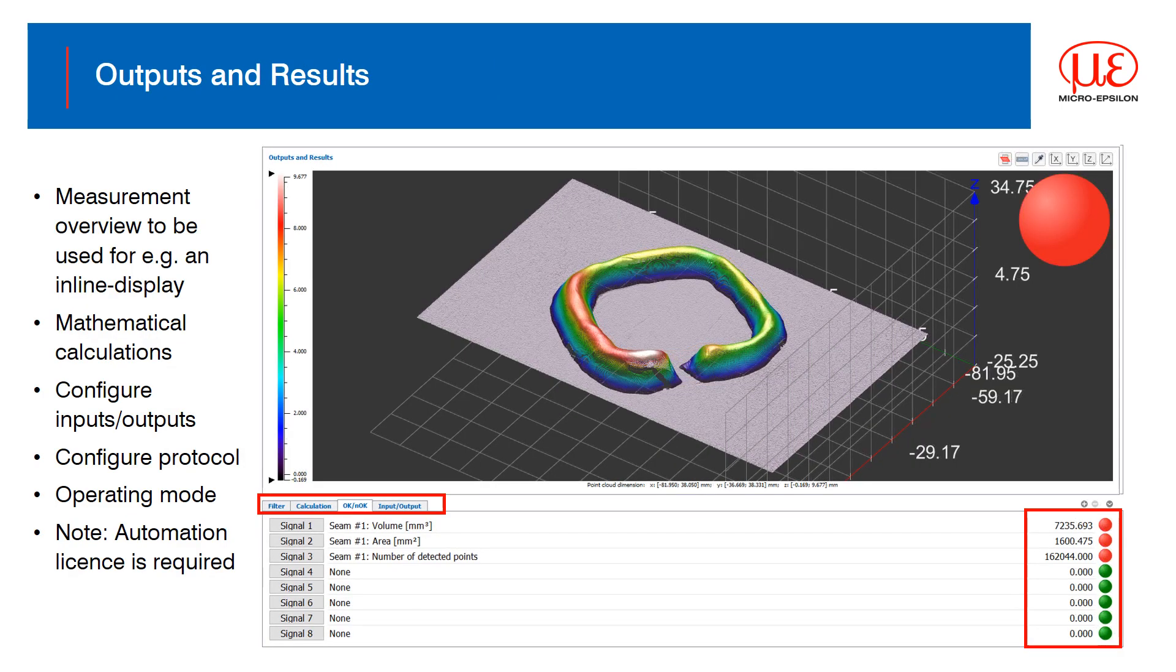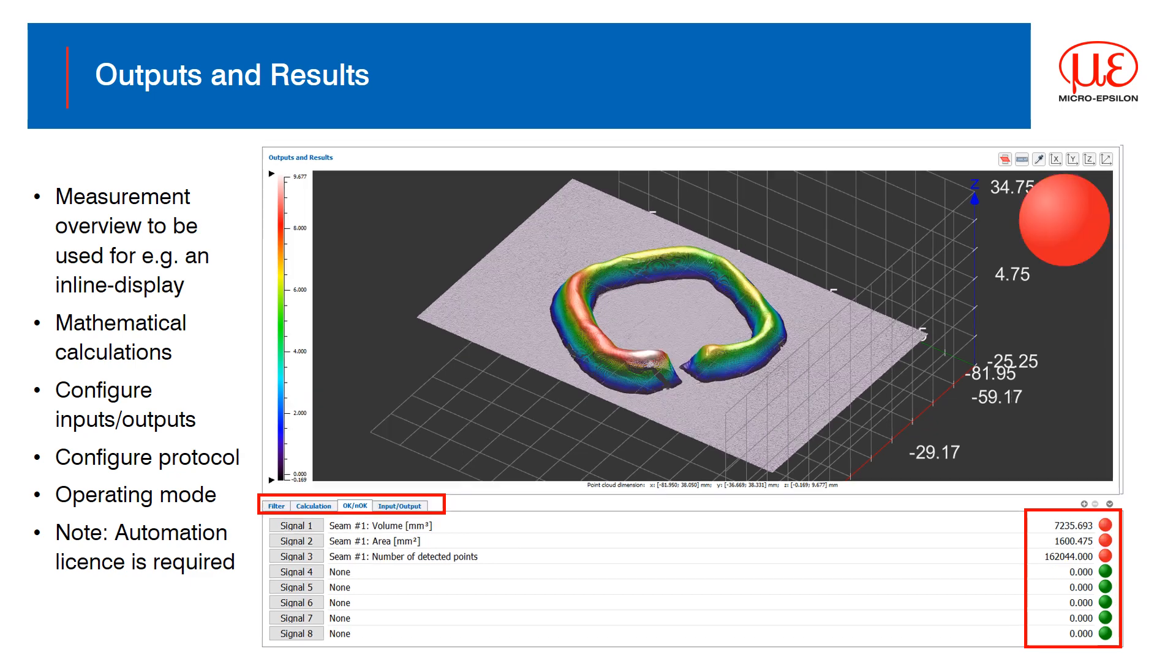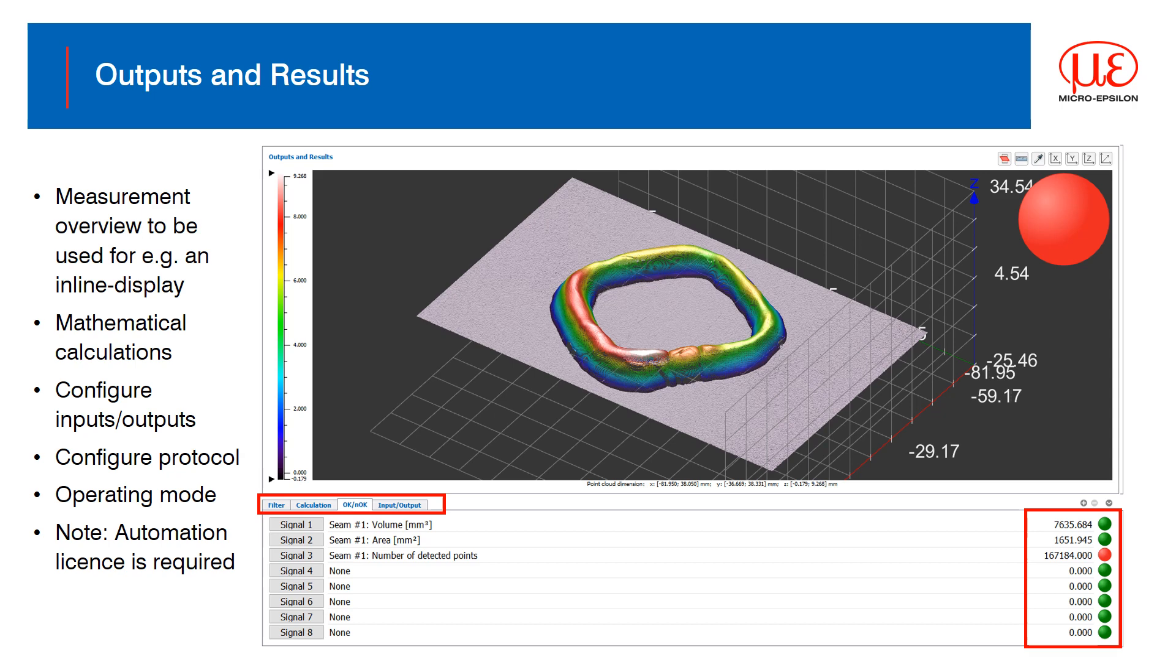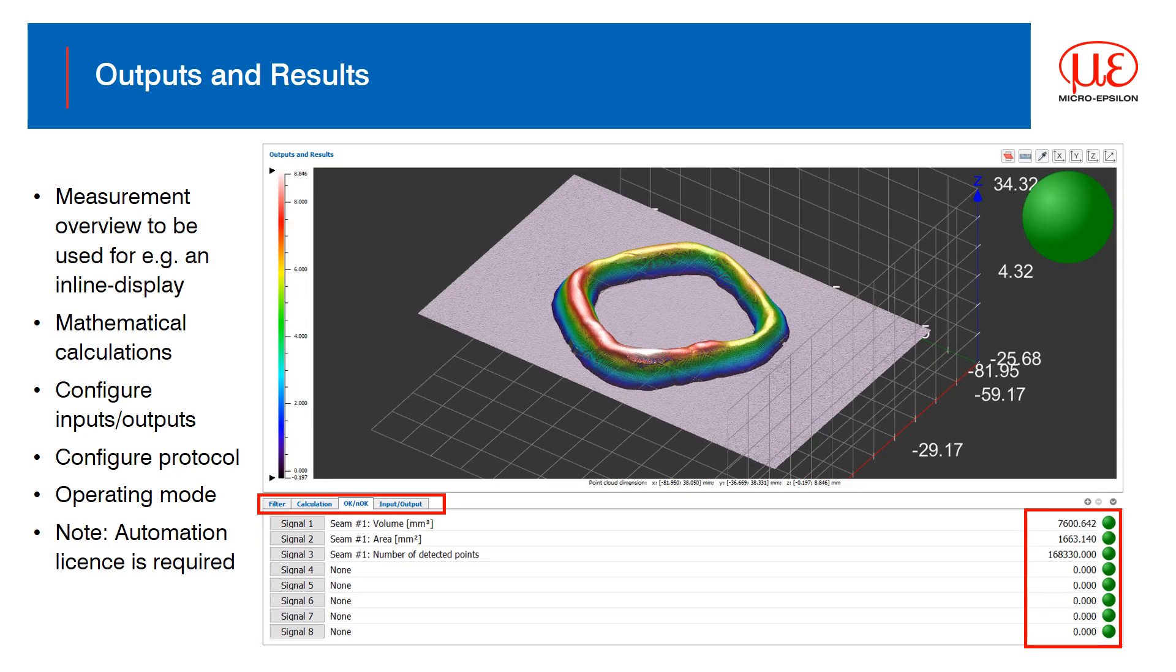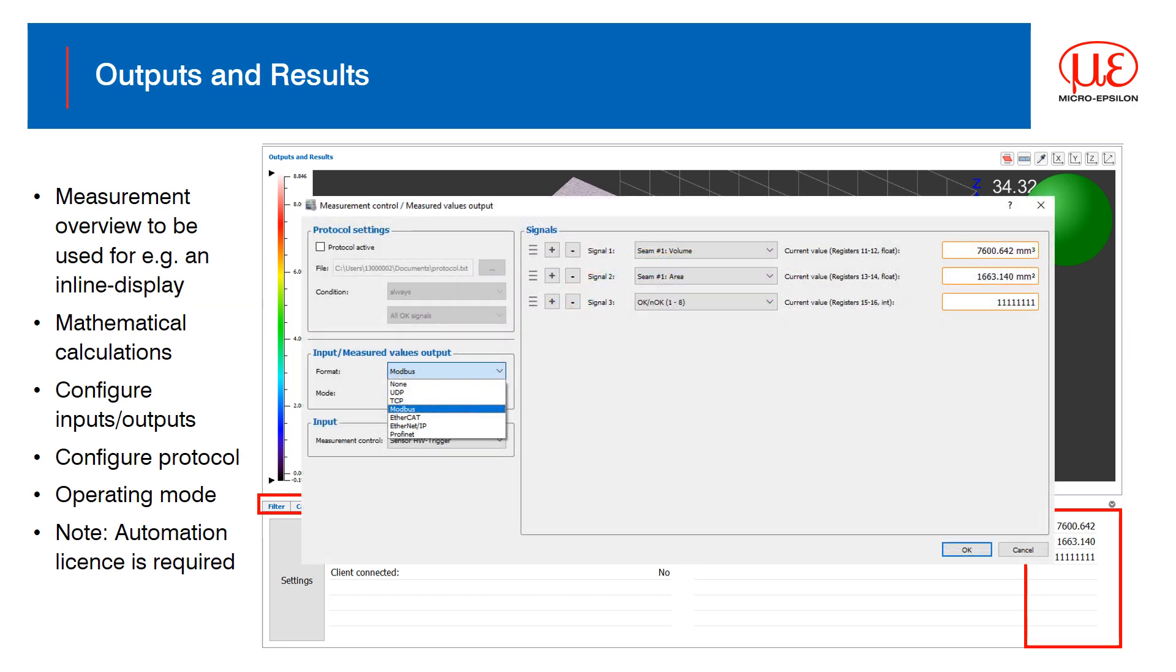Output and results in 3D inspect gives an overview of the measurements being made. You can set additional filters and perform calculations on the measurements as well as assign the pass-fail criteria in the OK, not OK tab. Furthermore, you can also select a communications protocol for transmitting the values to your PLC or other suitable device.